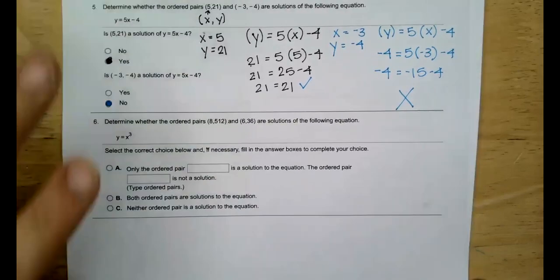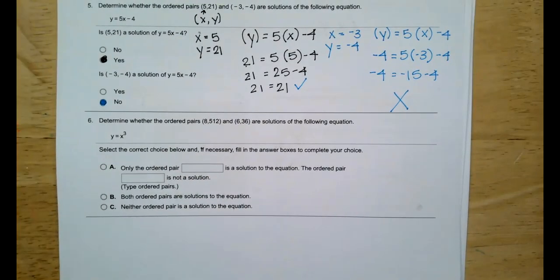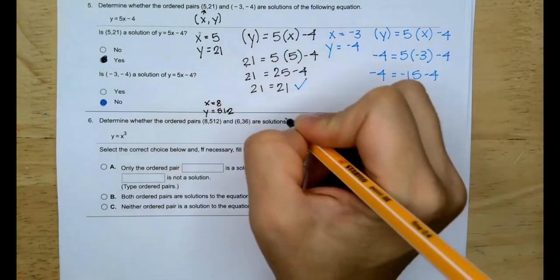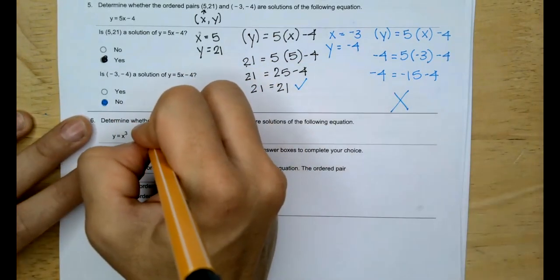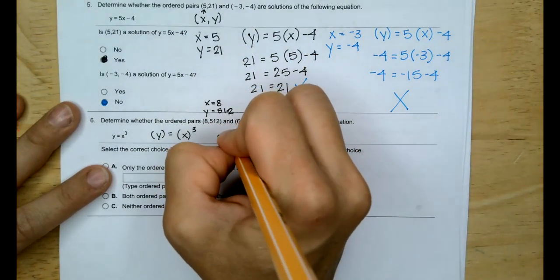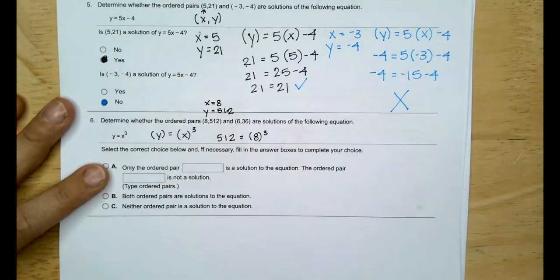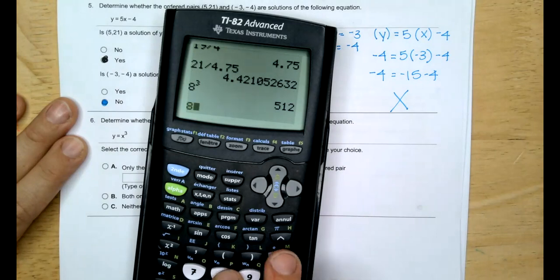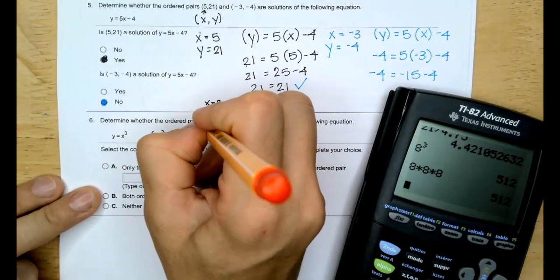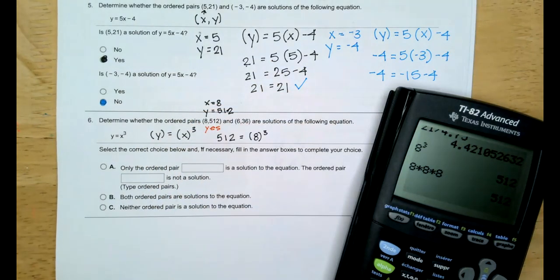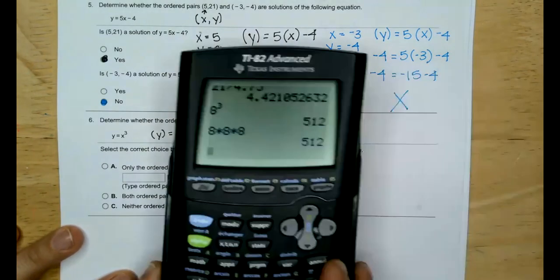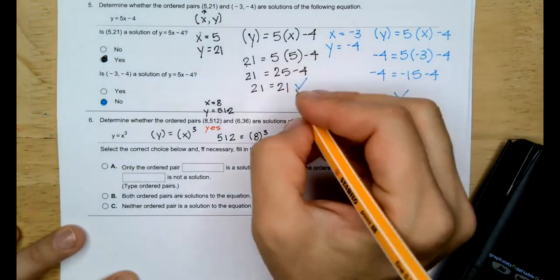Number six: determine whether the ordered pairs eight, five-twelve and six, thirty-six are solutions to y equals x cubed. For eight, five-twelve: five-twelve equals eight cubed, which is eight times eight times eight equals five-twelve. That is a solution. For six, thirty-six: is thirty-six equal to six times six times six? Six cubed is two-sixteen, so the answer is no.